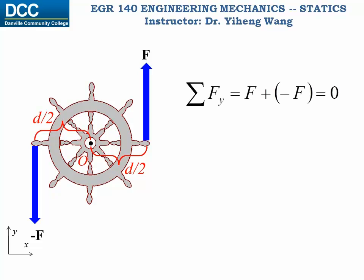We can write the force equilibrium equation: the resultant force acting on this wheel equals F plus negative F, which is zero, which means that the forces cancel each other out and therefore have no translational effect on the wheel. These two forces are known as a couple.